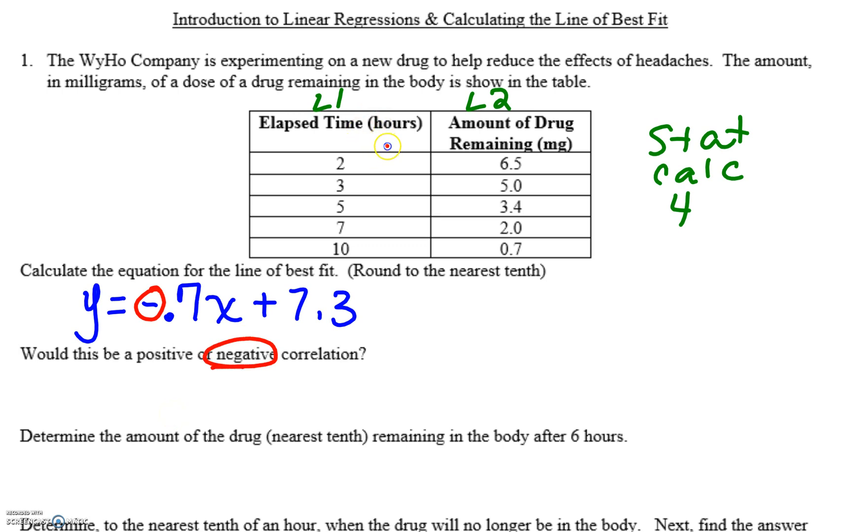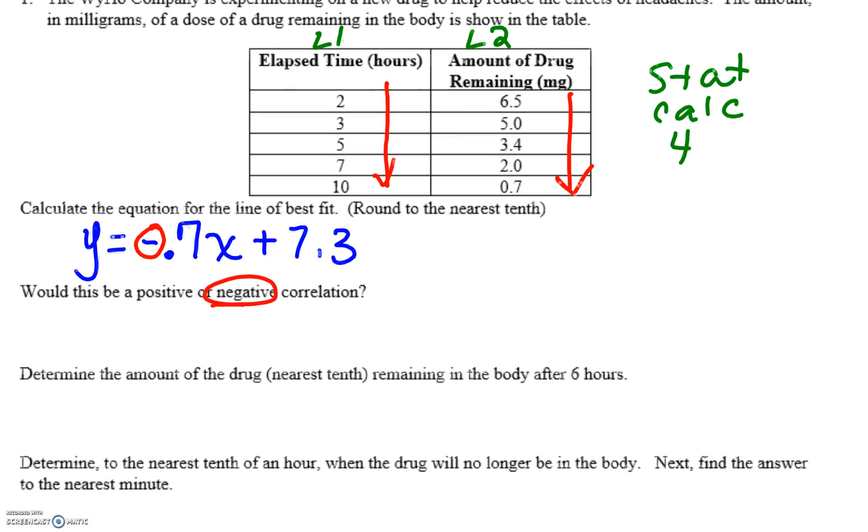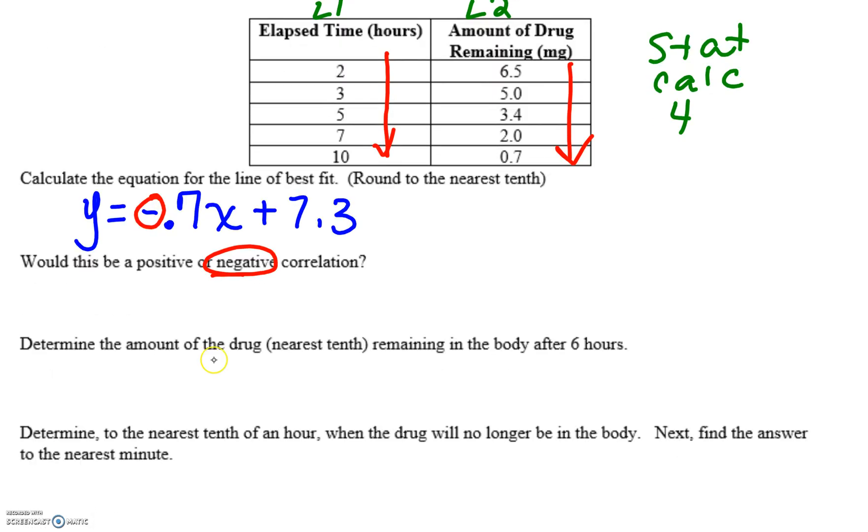As the lapse time increases, our remaining drugs decreases. The next part, determine the amount of the drug, so we don't know y if we're trying to find it, if we know that the hours or the t or the x times is 6. So for here, we're just going to go y equals negative 0.7, substitute in a 6 for the hours. And then when we type that into our calculator, we'll have about 3.1 milligrams.